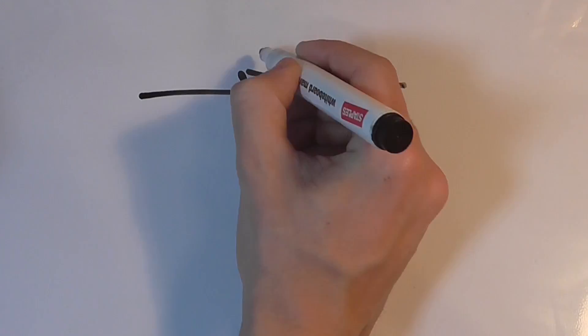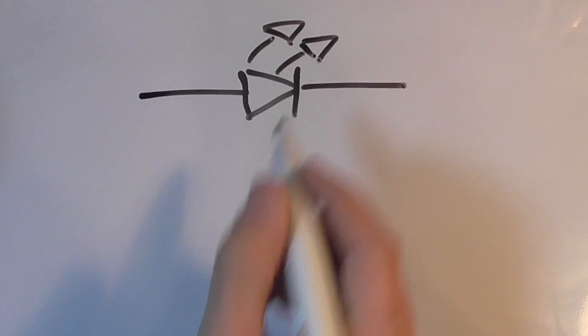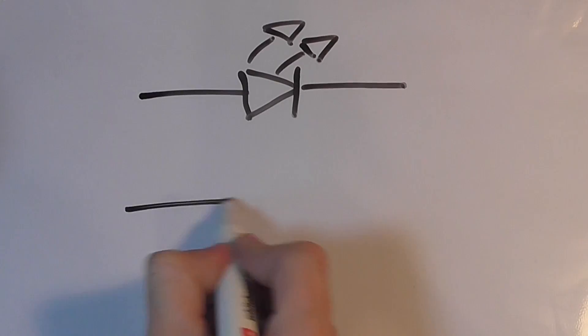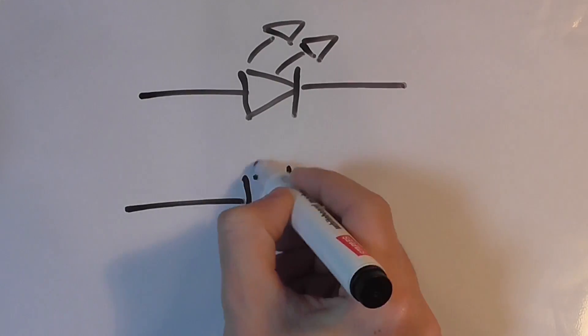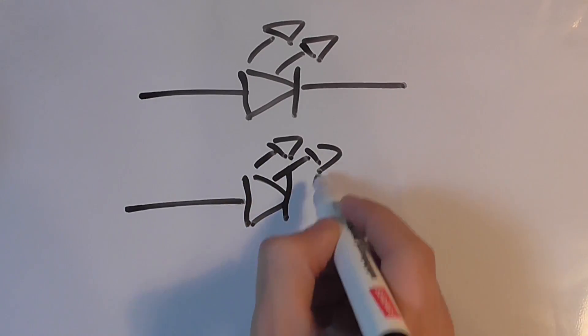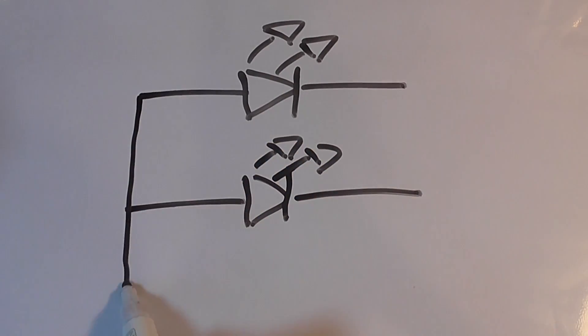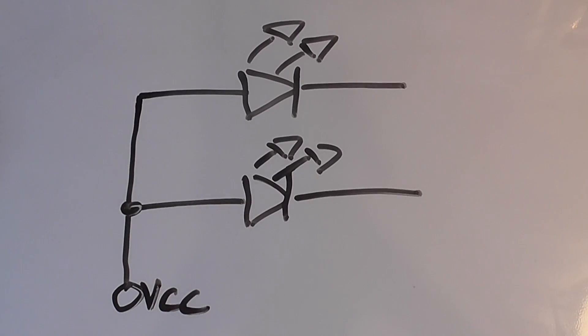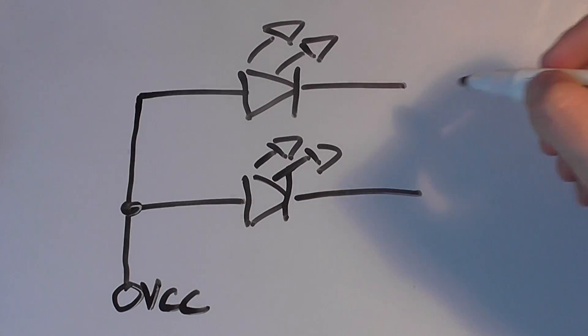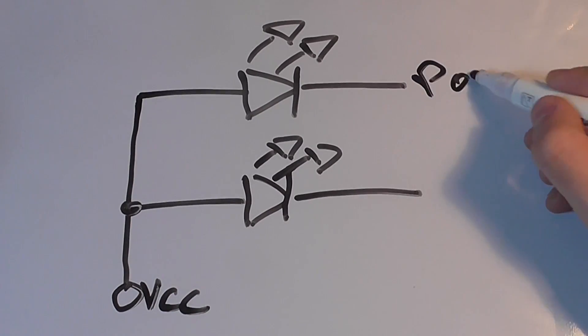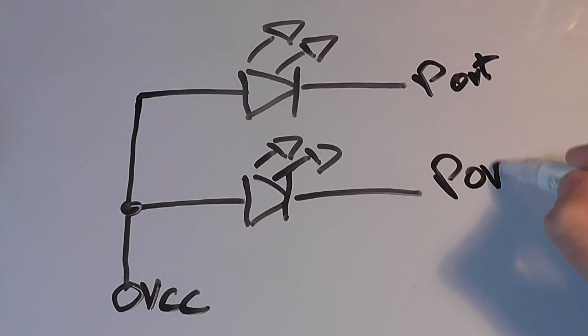In the common anode configuration, the positive sides of all the LEDs are connected to the same voltage source. You control them on the negative or cathode side. In this case, your logic will be inverted.